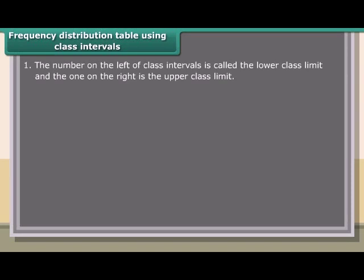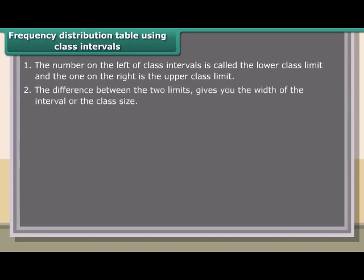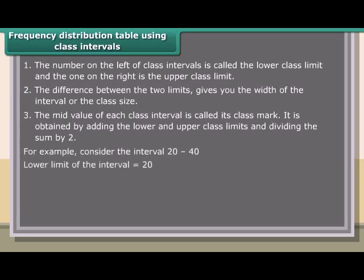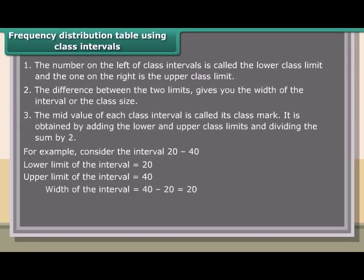The number on the left of a class interval is called the lower class limit, and the one on the right is the upper class limit. The difference between the two limits gives you the width of the interval, or the class size. The mid-value of each class interval is called its class mark — obtained by adding the lower and upper class limits and dividing by 2. For example, for the interval 20 to 40: lower limit is 20, upper limit is 40, width is 40 minus 20 equals 20, and class mark is (20 + 40) / 2 = 30.